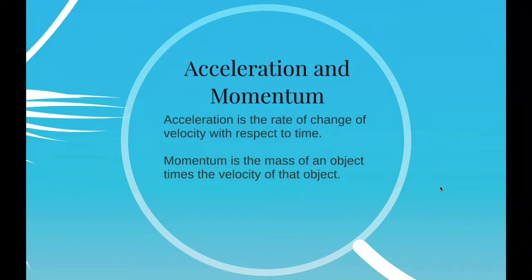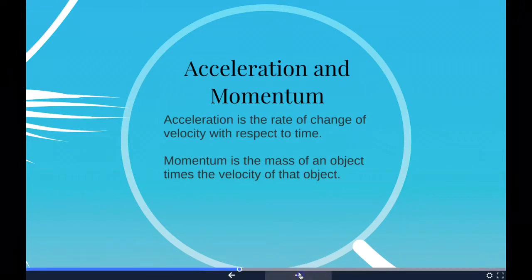Therefore momentum depends on the variables mass and velocity. In terms of an equation, the momentum of an object is equal to the mass of the object times the velocity of the object. So we've got to know that momentum is mass times velocity.